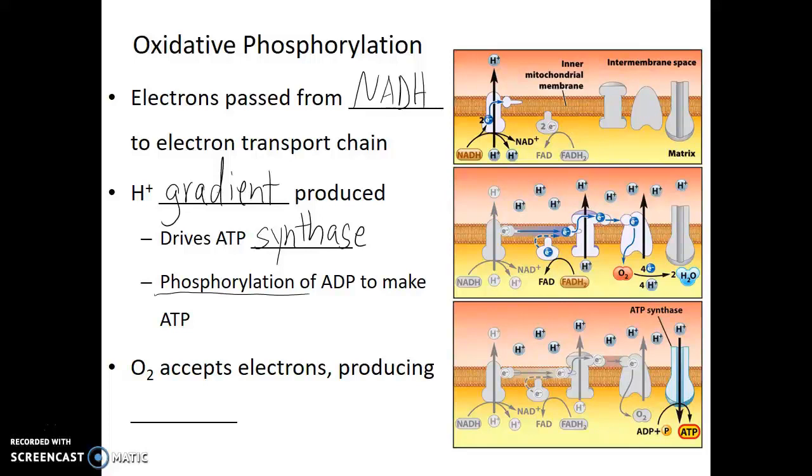At the very end of this electron transport chain, oxygen gas accepts the electrons, along with some hydrogen protons, producing water.